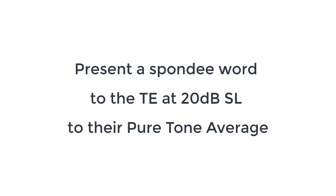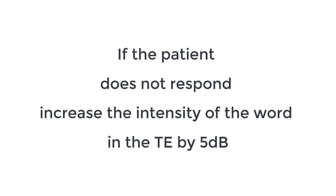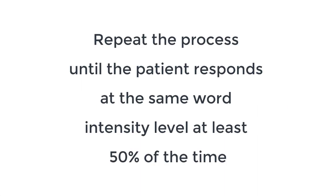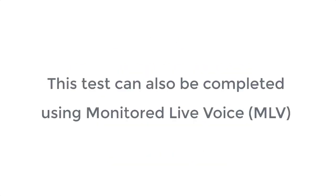So 20 decibels above their three-frequency PTA for that ear. If the patient does not respond, increase the intensity of the word in the test ear by five decibels. If the patient does respond, decrease the intensity of the word in the test ear by 10 decibels. Repeat the process until the patient responds at the same word intensity level at least 50% of the time. This test can also be completed using monitored live voice.